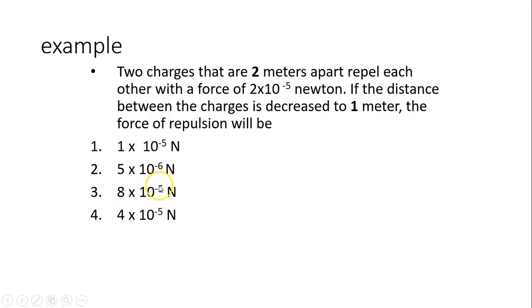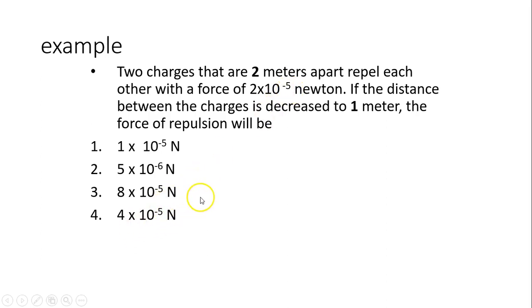Two charges that are two meters apart repel each other with a force of 2 times 10 to the negative 5 newtons. If the distance is decreased to one meter — the distance is halved — the force will become quadrupled. So quadruple of 2 times 10 to the negative 5 is 8 times 10 to the negative 5 newtons. The answer is three.